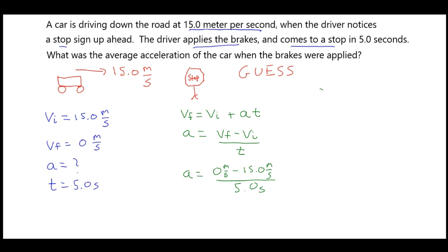I then find that the acceleration, the average acceleration over this period of time, is negative 3.0 meters per second squared. In other words, every second that went by, I changed my velocity by negative 3 meters per second.